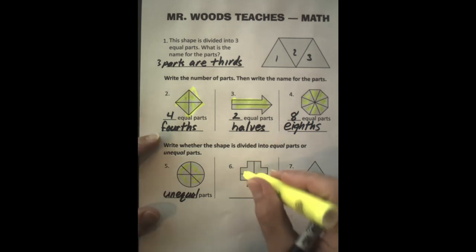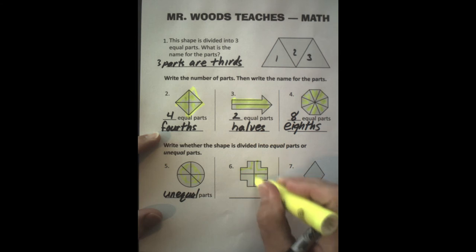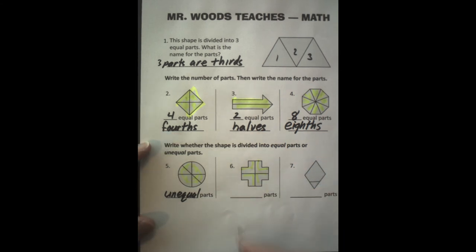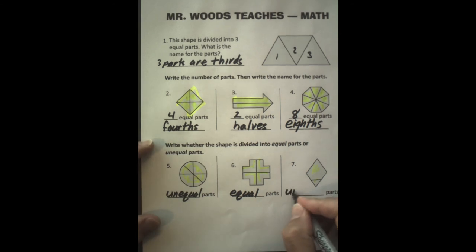We have one and it looks the same as this one. It looks the same as this one and it looks the same as this one. So we have equal parts. And then number seven, the last one. We have one, two parts, but they're not equal. So we say they are unequal.